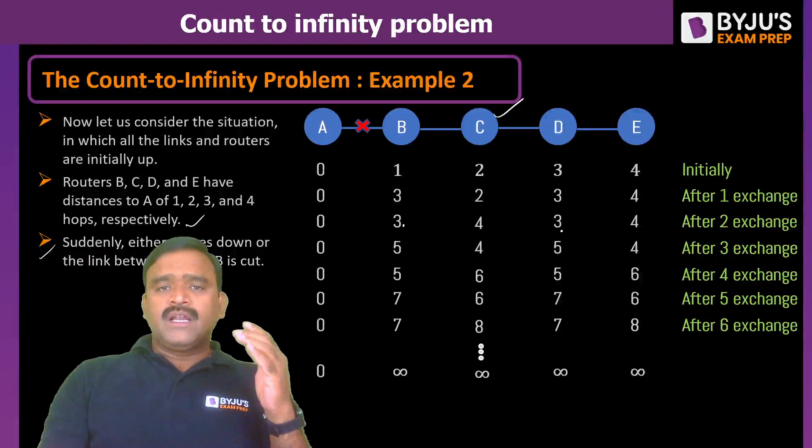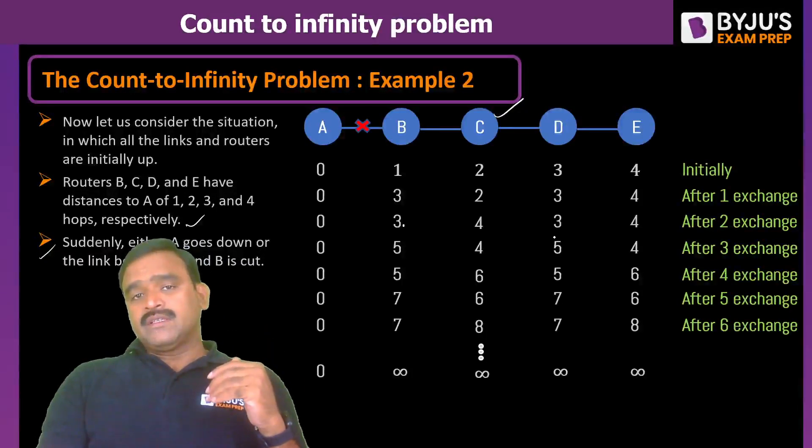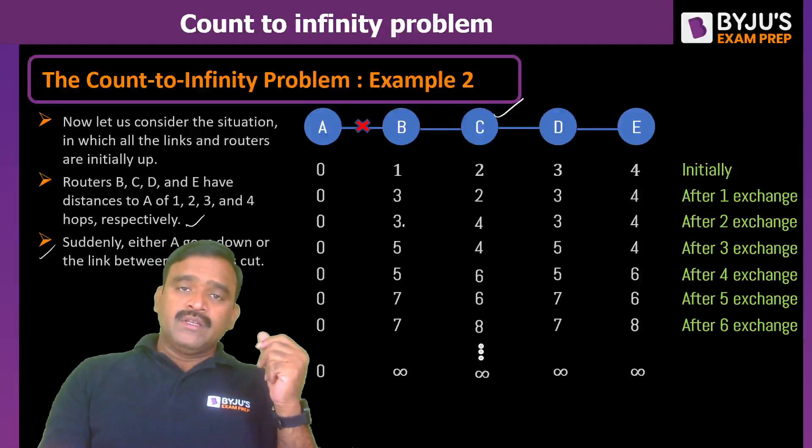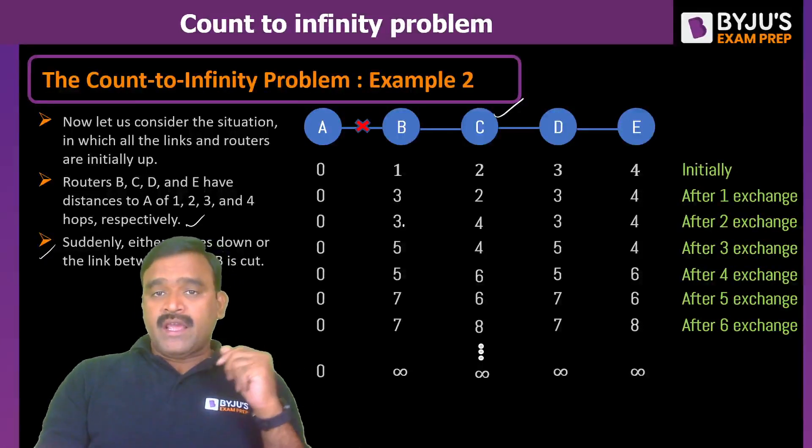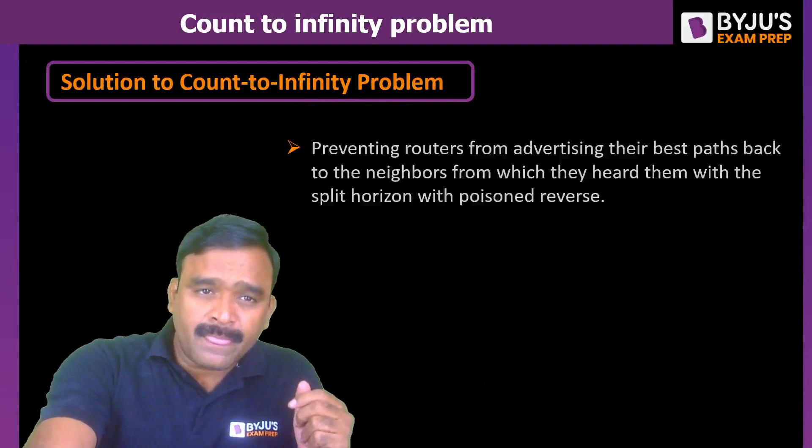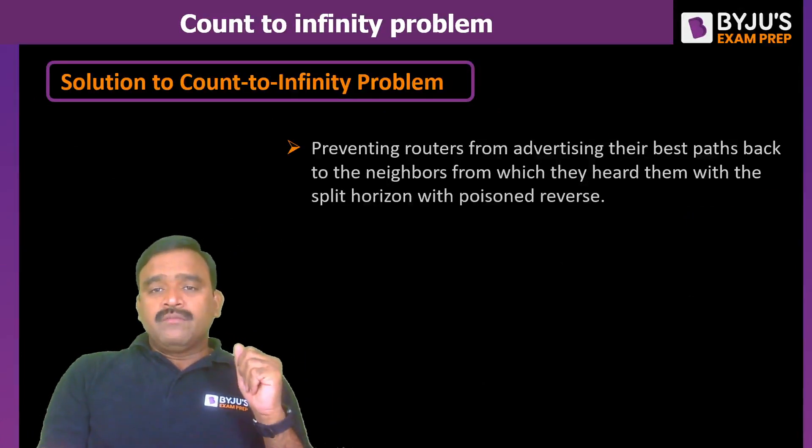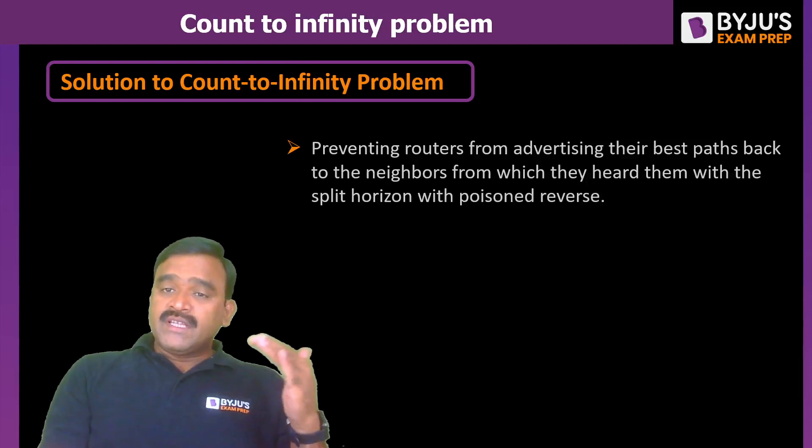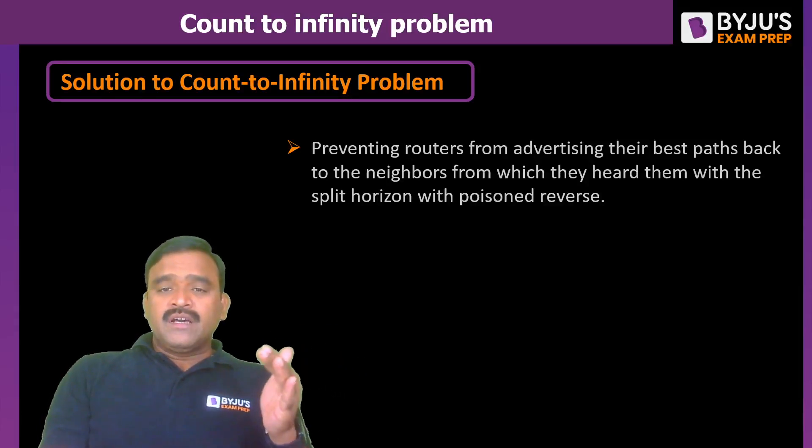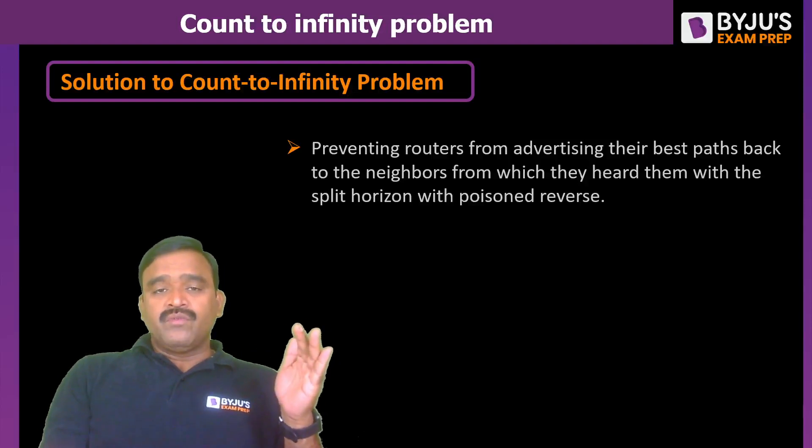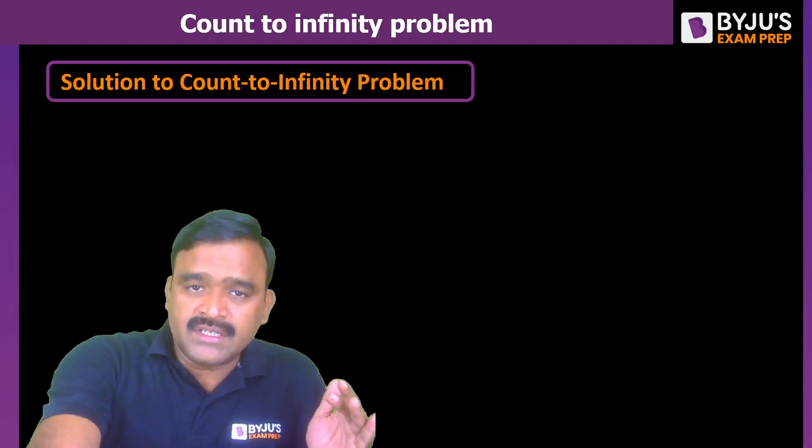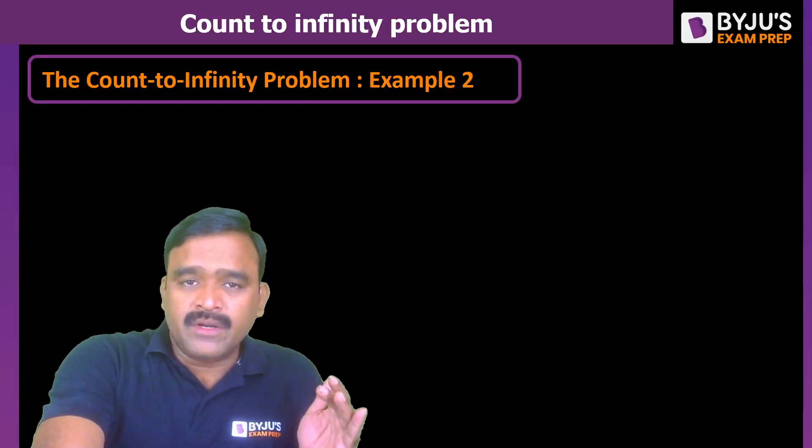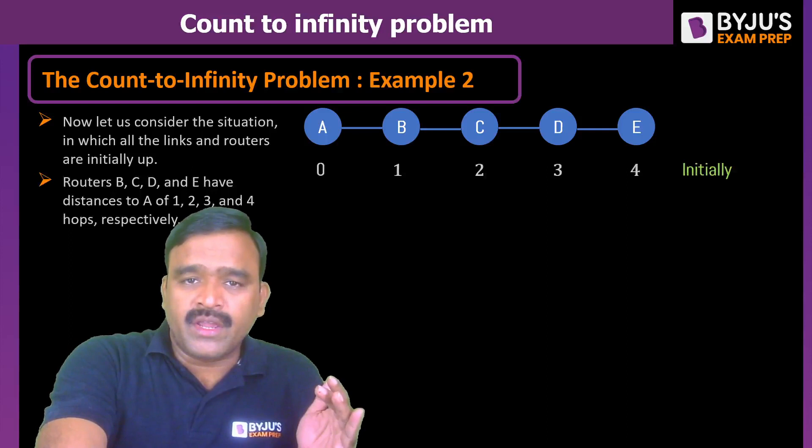This is the count to infinity problem. And there is a solution also for this. That is called hack problem. There is a hacking, split horizon hacking. You can see this. Solution is preventing routers from advertising their best path back to the neighbors from which they heard. With the split horizon, with the poison reverse, we can solve that. I will just tell you what is the split horizon. Generally, if you go through this particular example.